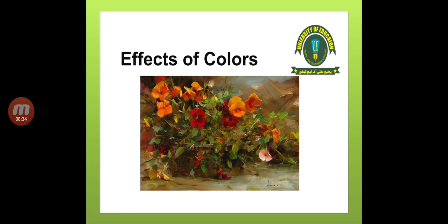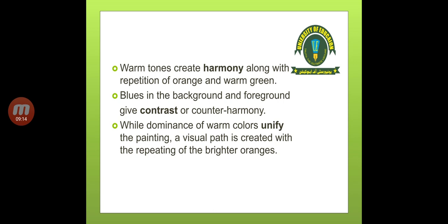To further explain the effects of colors, here I have shown you a painting. First look at the painting as a whole — you can see flowers, a pink flower on the right, and the leaves. Think about whether the feeling of this painting is of warm colors or cool colors. When you use color in your own painting, apply this same thinking. In this painting, warm tones create harmony along with repetition of orange and warm green — so warm green and the repetition of orange create a harmony here.